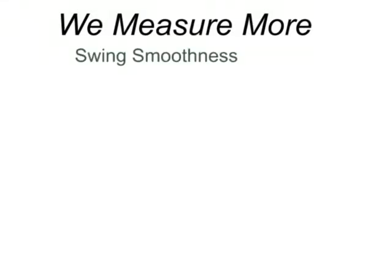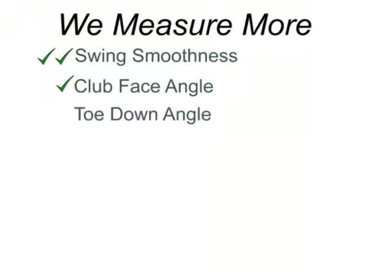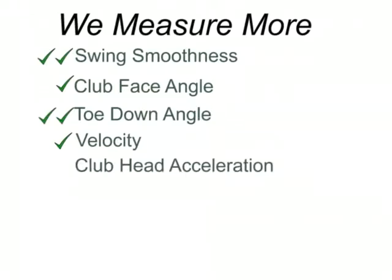In conclusion, the unmatched combination of capabilities are: swing smoothness characteristics no one else offers; club face angle — competition only measures a single point in time; toe down angle with time variation and maximum value — no one else offers this; velocity that is dynamically measured across time while others only offer a single point in time; club head acceleration measured on the travel path across time with maximum acceleration noted.